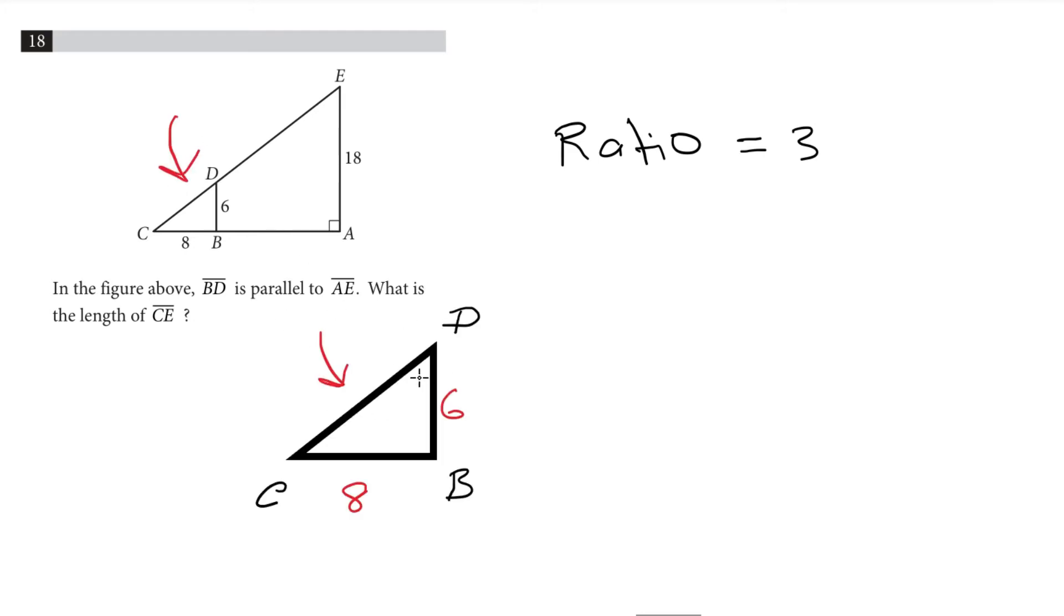In order to find the length of the side CD, what we need to do is use the Pythagorean theorem. Length of the side CD is going to be equal to square root of length of the side CB squared plus length of the side BD squared.